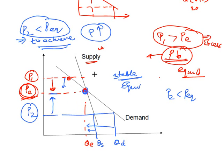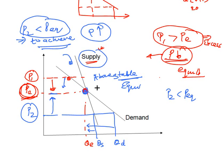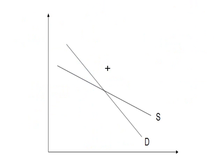Stable equilibrium is achieved when the supply curve cuts the demand curve from above. If this is the demand curve and the supply curve cuts it from above, you will get stable equilibrium. Now let's look at a different type of supply and demand configuration.